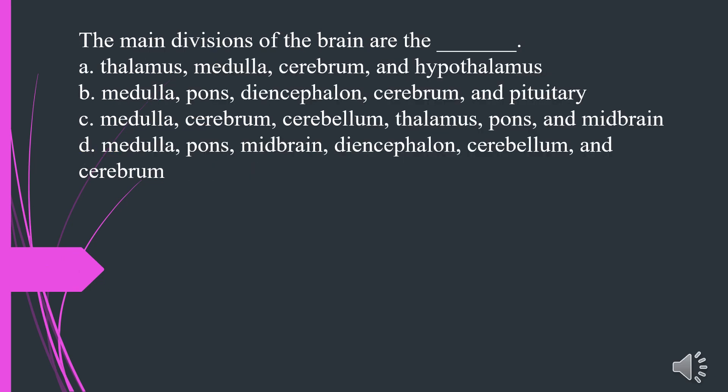The main divisions of the brain are the: A. Thalamus, medulla, cerebrum, and hypothalamus. B. Medulla, pons, diencephalon, cerebrum, and pituitary. C. Medulla, cerebrum, cerebellum, thalamus, pons, and midbrain. D. Medulla, pons, midbrain, diencephalon, and cerebrum. The answer is D. Medulla, pons, midbrain, diencephalon, and cerebrum.